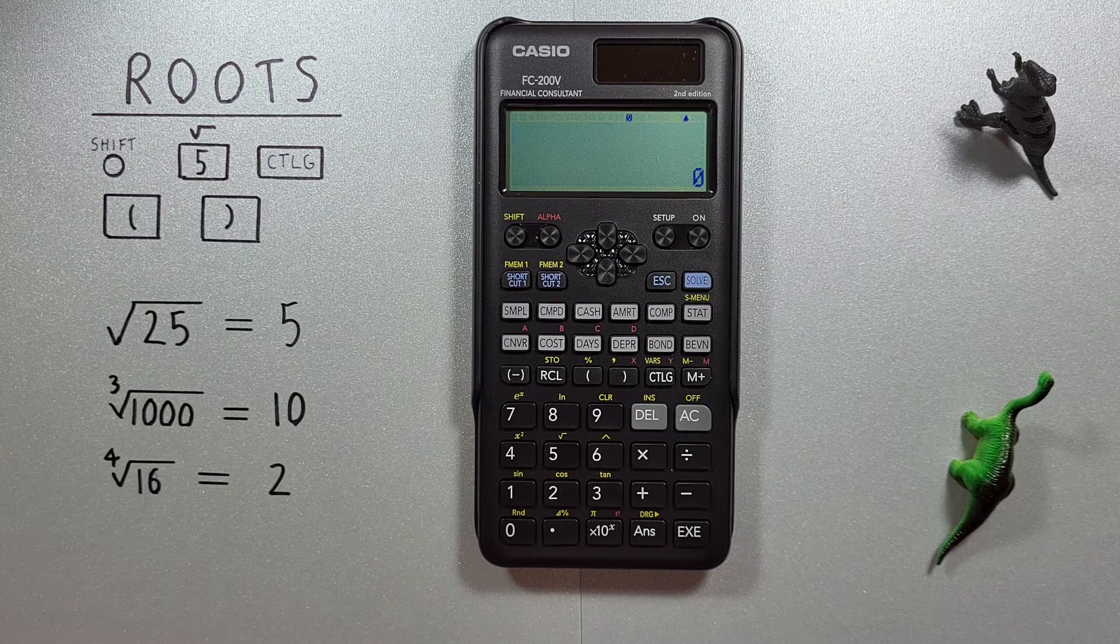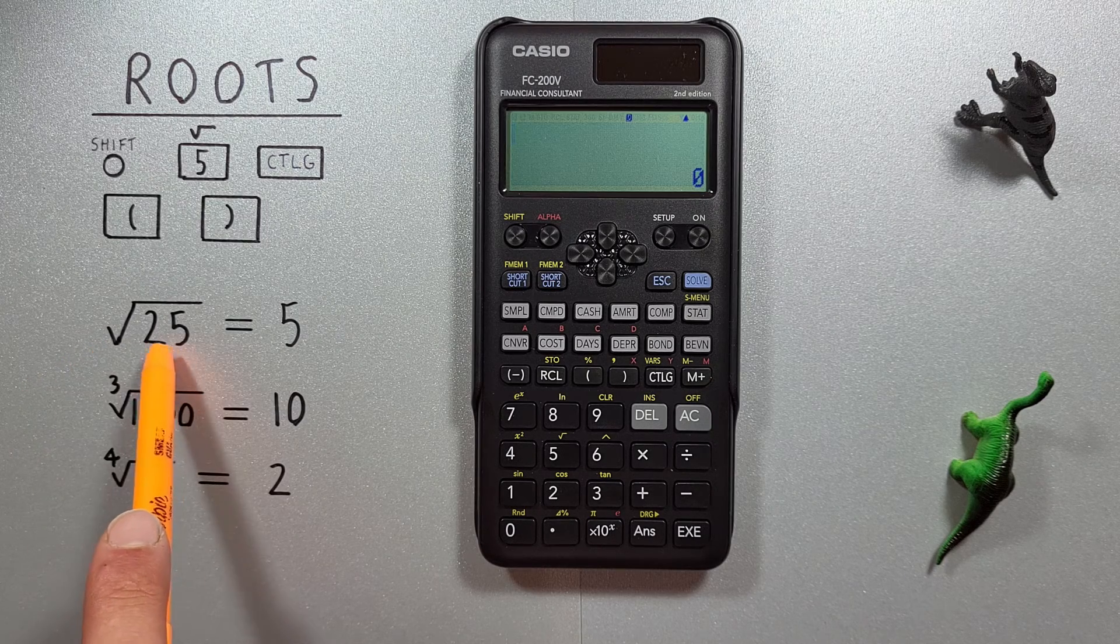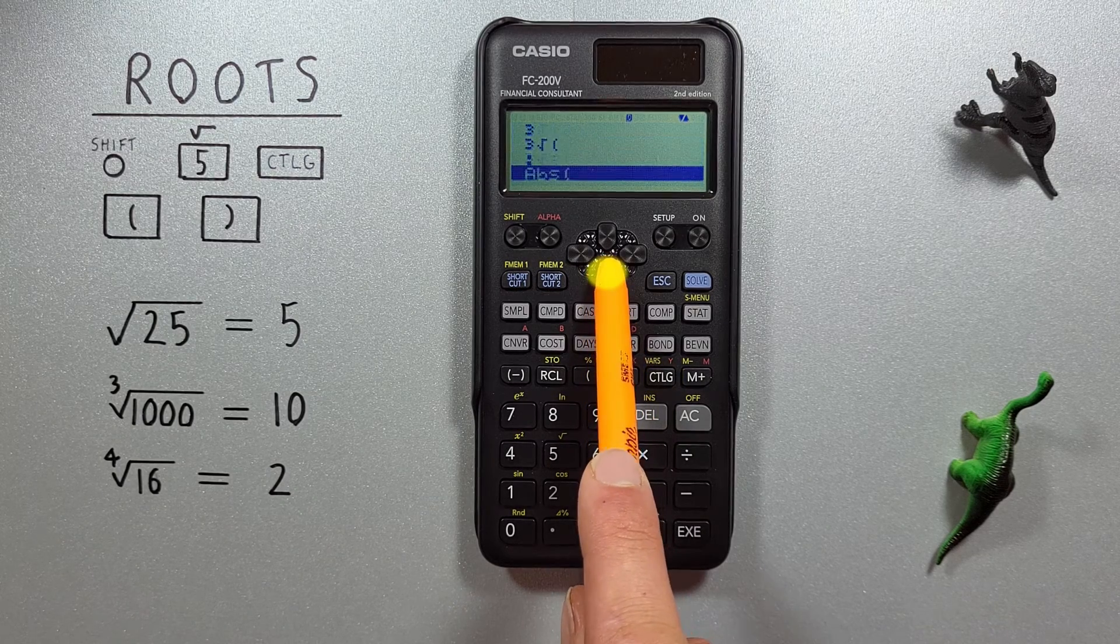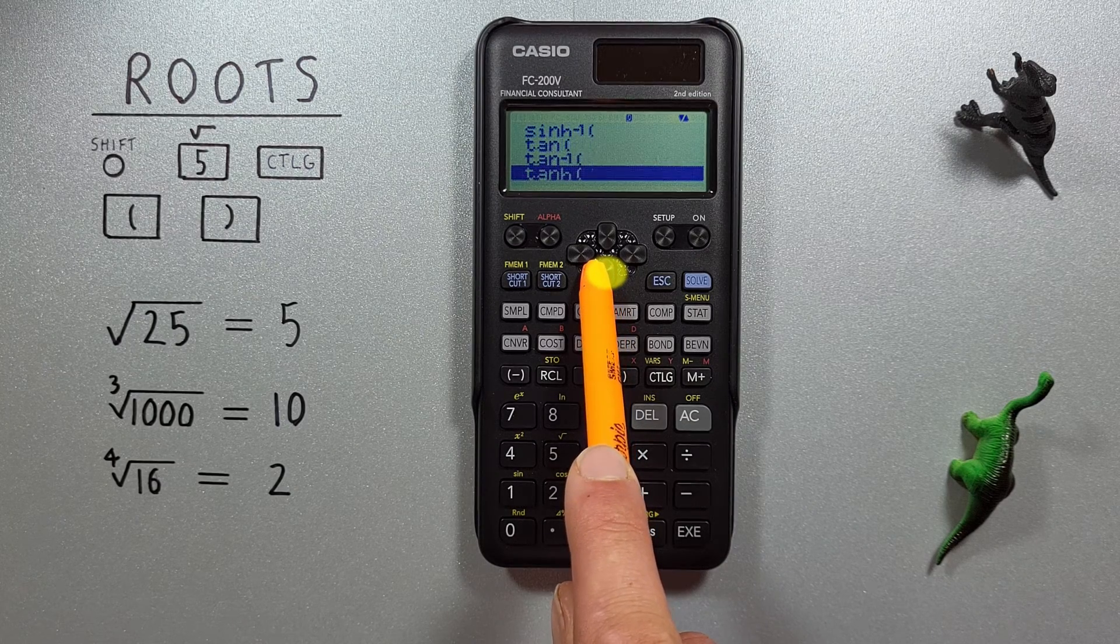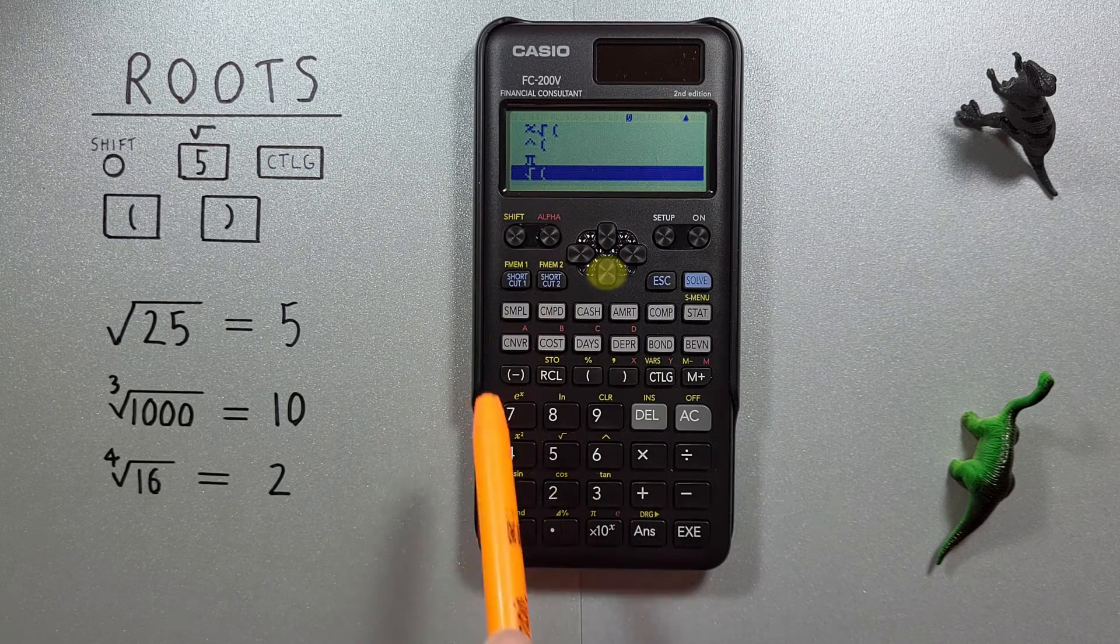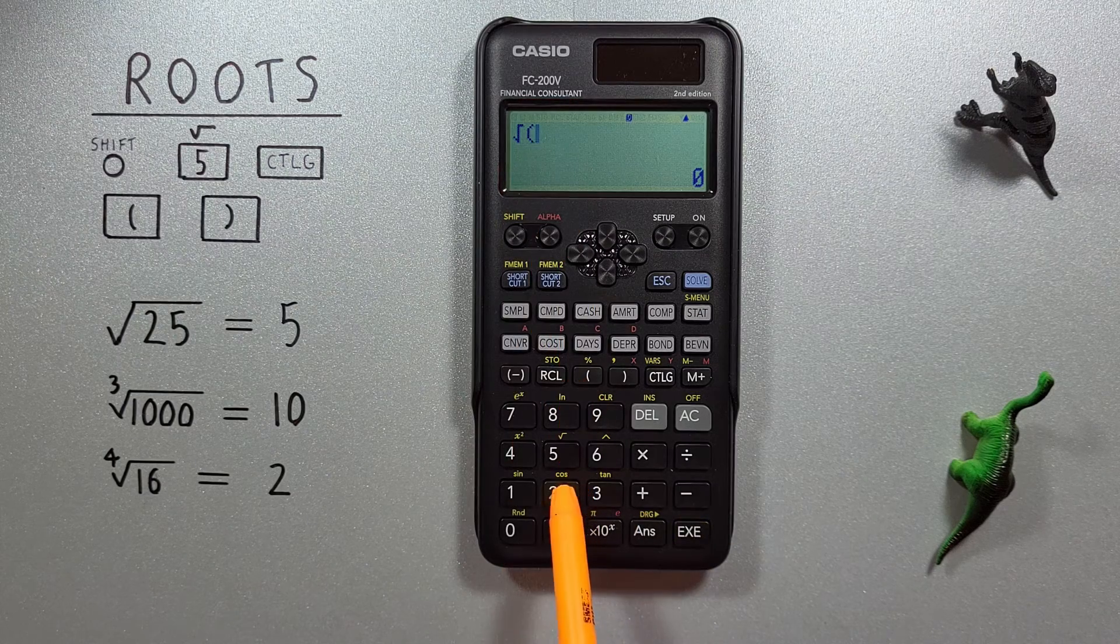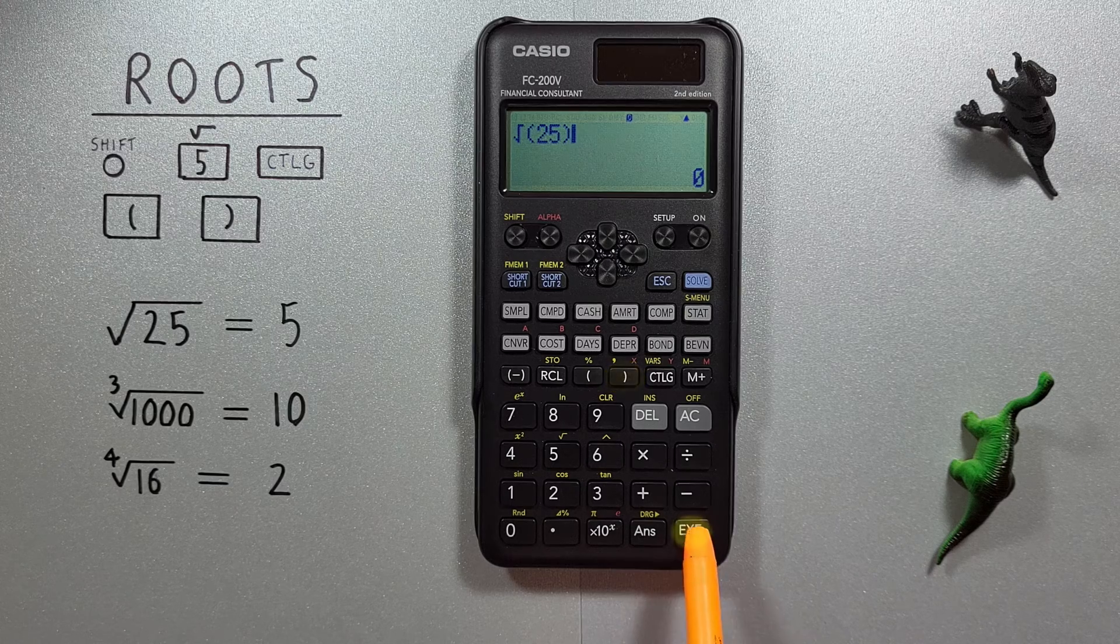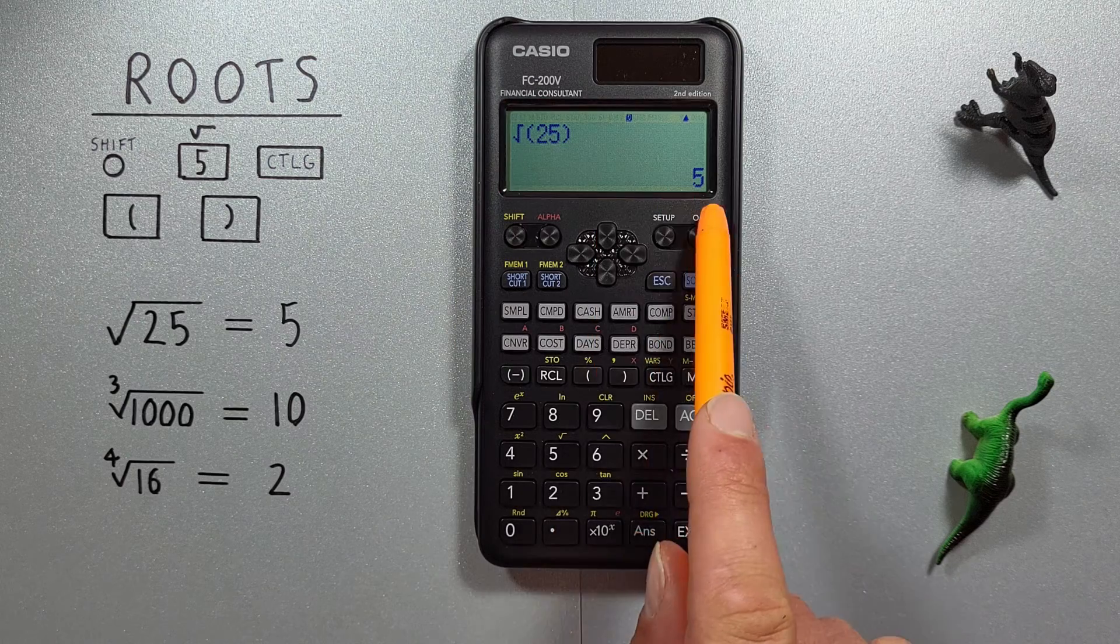We can also solve this using the catalog key. Again, if we want to find the square root of 25, we can press catalog, and then scroll all the way down until we see the square root, select that, enter our 25, close our bracket, and hit exe. And there we go. Again, we get the square root of 25 is equal to 5.